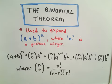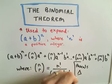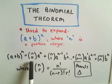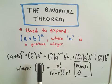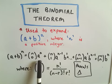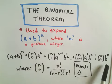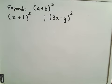Another way to find these coefficients is to use what's called Pascal's Triangle — I'll cover that in another video. Back to the formula: (a + b) raised to the n equals n choose 0 times a to the n, plus n choose 1 times a to the n minus 1 times b to the first, and we continue increasing the r value by 1. The exponent on a starts at n and decreases by 1, while the exponent on b increases by 1 until it reaches n.